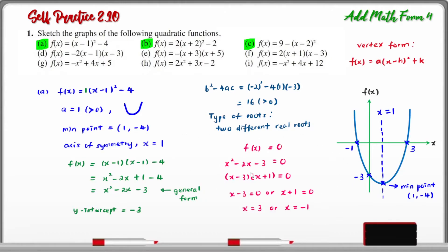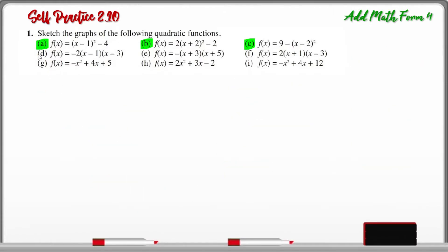By using the same method, you can find the information needed to draw the graphs for questions B and C. For questions D, E, and F, all of these quadratic functions are written in intercept form, which is f(x) = A(x - P)(x - Q).